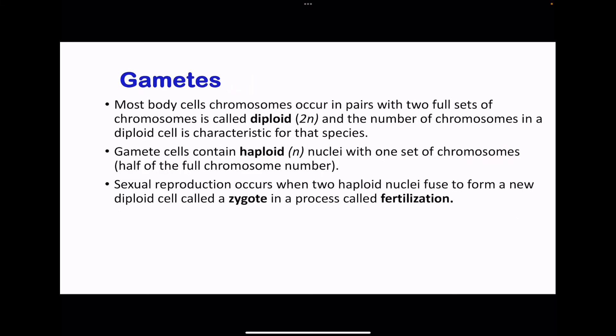Moving on to gametes. Human body cells are diploid. However, gametes are haploid, meaning they have half the number of chromosomes. During sexual reproduction, two haploid gametes — or two haploid nuclei — fuse, and a zygote is produced. This zygote is diploid because two haploids came together, and that process is called fertilization.